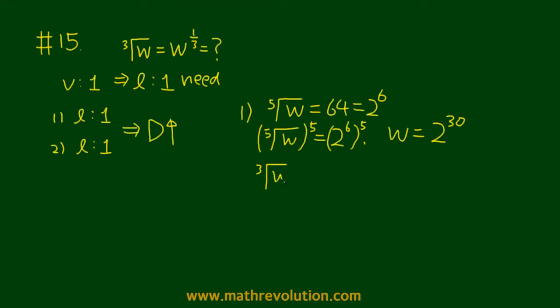What we want to know is the cube root of W, so that's 2 to the 30th, and then take another power of a third, which gives us 2 to the power of 10. We've solved for W, and condition one is sufficient.